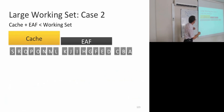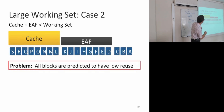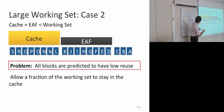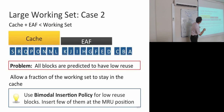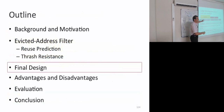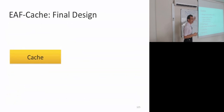In the second case, the working set is greater than both the cache and EAF together. The problem is all blocks are predicted to have low reuse because by the time you hit A, it's no longer in the evicted address filter. We would like to allow a fraction of the working set to stay in the cache, so we use previous work's bimodal insertion policy — inserting only a few blocks at the MRU position. This case doesn't get handled by clearing the EAF alone since the working set is too large.